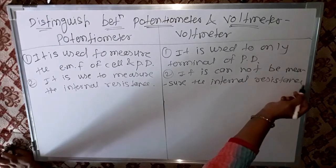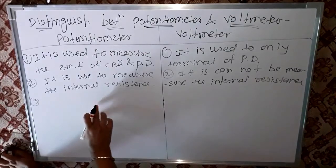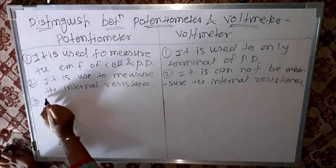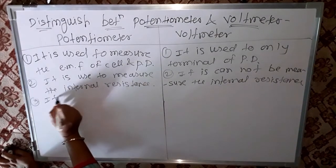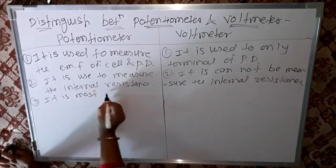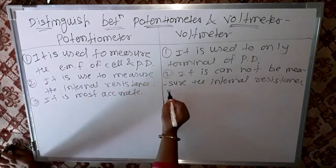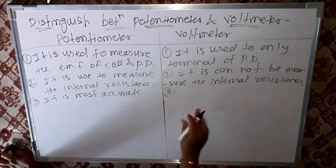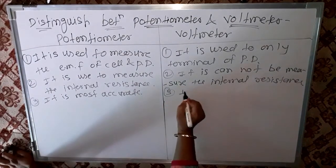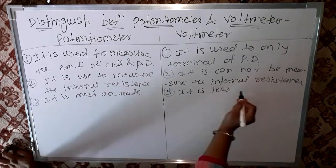Third point: the potentiometer is the most accurate. In contrast, the voltmeter is less accurate.